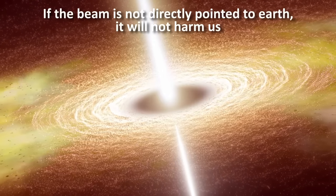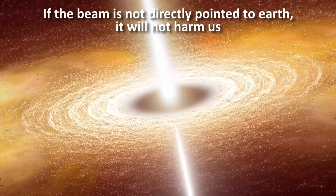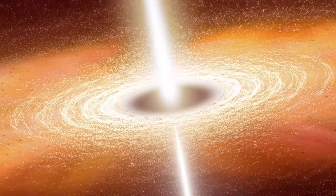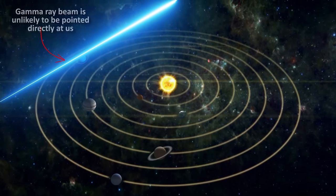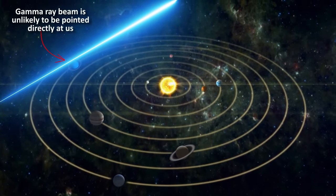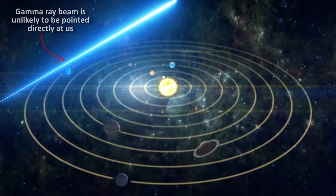Since the gamma ray beam is collimated like a laser, it does not spread out much, like the light from a lamp. So there is a low probability that it would just happen to be directly pointed at us.